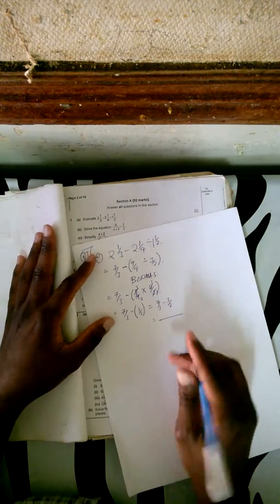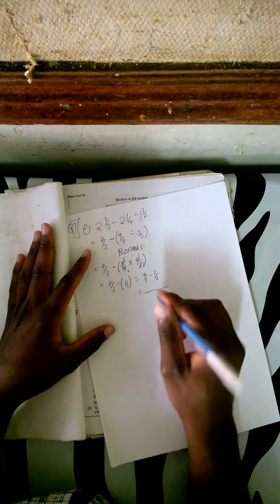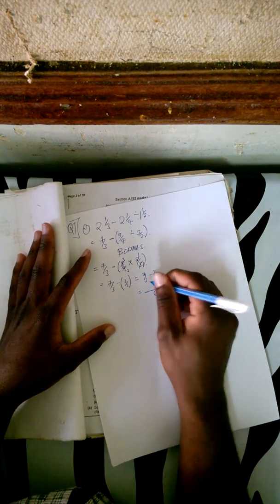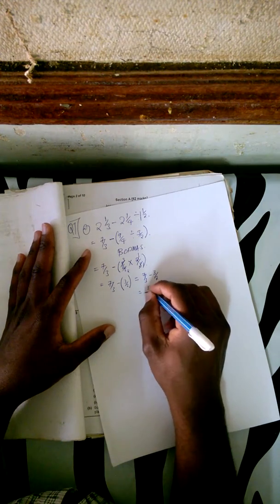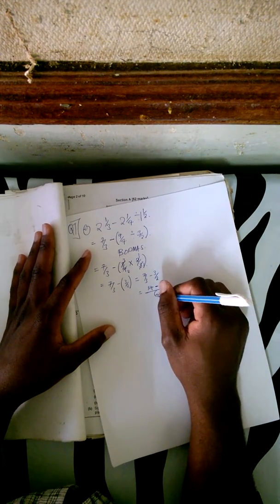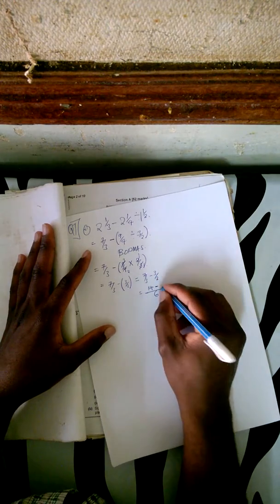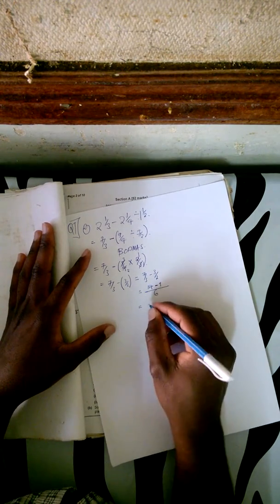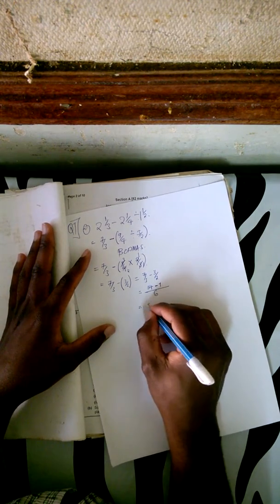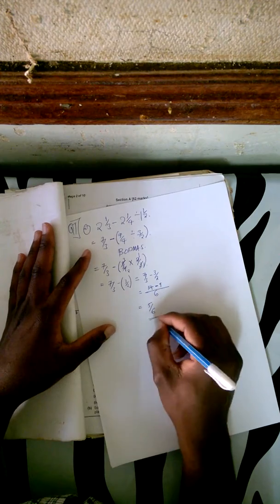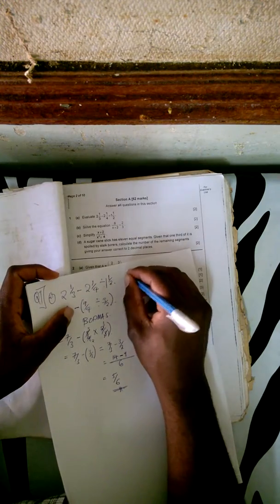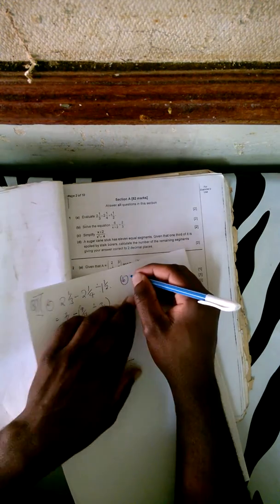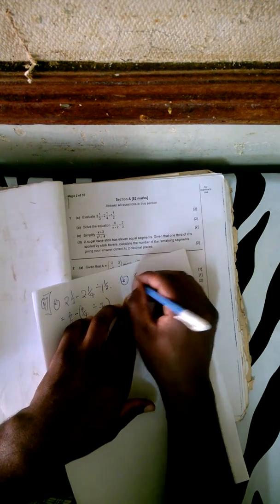So we have 7 over 3 minus 3 over 2. From here we look for the lowest common multiple of 3 and 2, which is 6. 6 divided by 3 is 2, times 7 is 14. Minus: 6 divided by 2 is 3, times 3 is 9. So 14 minus 9 is 5 over 6. This is our answer.